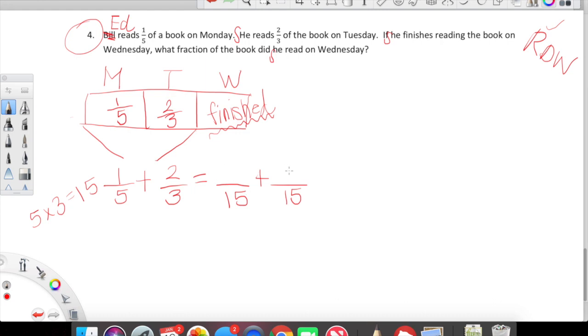And then in order to figure out what our numerators are as we're finding equivalent fractions to one fifth and two thirds, we just have to think, well, I multiplied five by three to get fifteen. Now I need to multiply one by three. One times three is three. Okay. Over to three. I multiplied three times five to get fifteen, which means I also need to multiply my two by five, which is ten. We can add three fifteenths and ten fifteenths pretty easily to find thirteen fifteenths. So thirteen fifteenths were read on Monday and Tuesday.